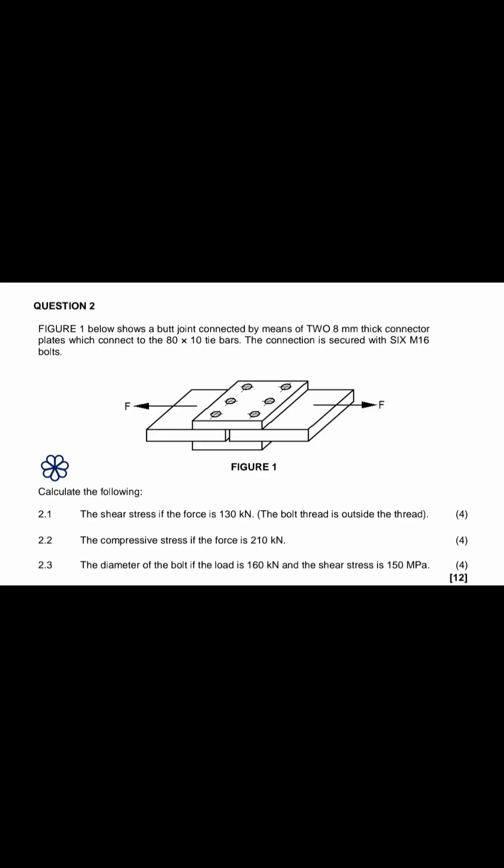Today we are starting a new chapter called Bolt Connection or Rivet Connection. I took this question from previous question papers — it's question 2 and it goes like this: Figure 1 below shows a butt joint connected by means of two 8mm thick connector plates which connect to the 80×10 tie bars. The connection is secured with 6 M16 bolts. There's the diagram, Figure 1.